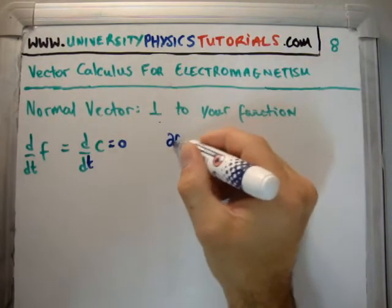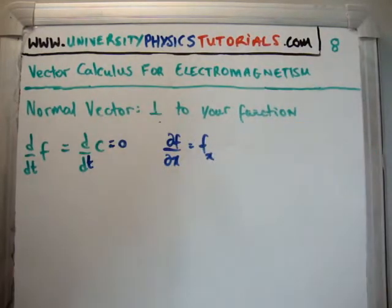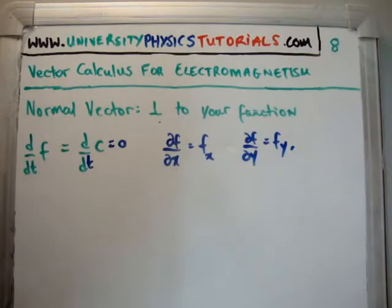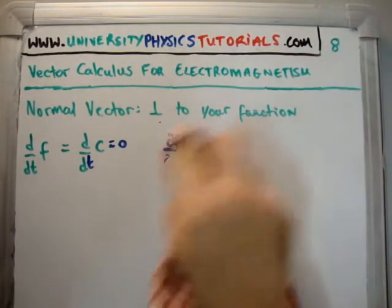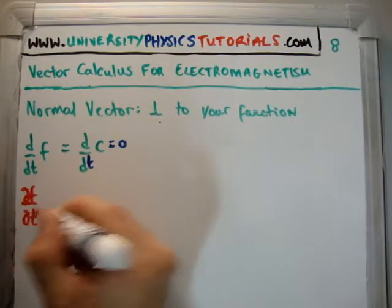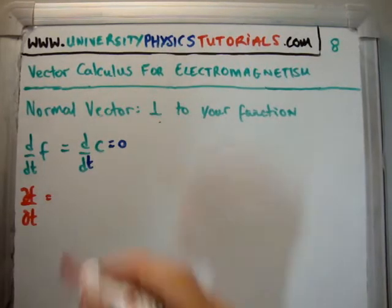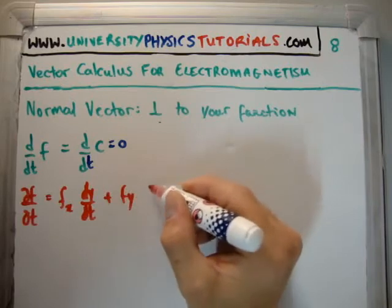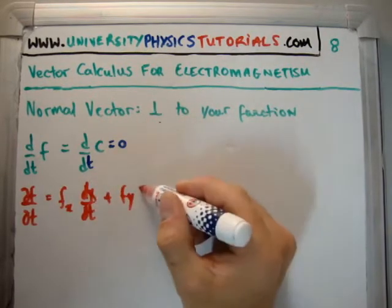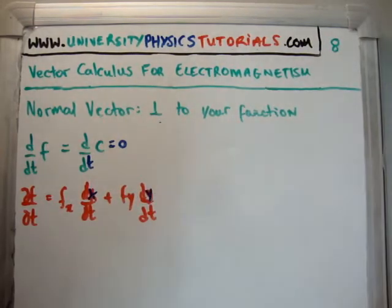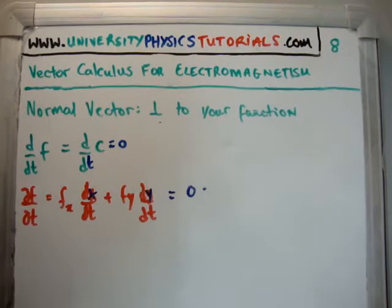I'll introduce shorthand notation: del f/del x will be written as f_x, and del f/del y as f_y. Note that if your function is only a function of one variable, you use total derivatives. Putting it all together, we get: del f/del t equals f_x · dx/dt plus f_y · dy/dt, and that equals zero. This is the rate of change of our function that gives us the level curves.